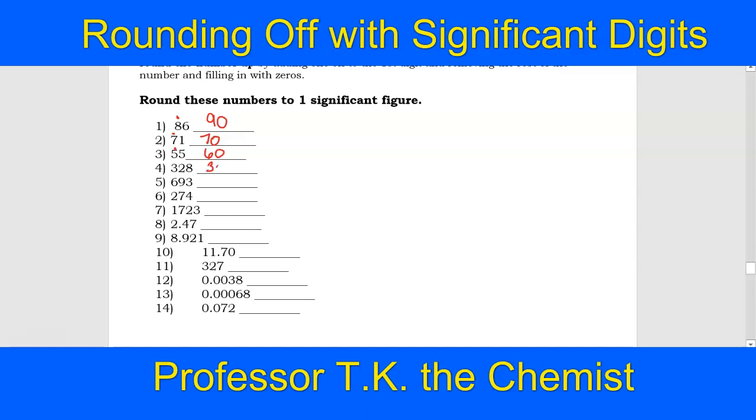That two tells that three to stay put. So I'm going to replace the two with a zero, and the eight will also get replaced with another zero. So 328 becomes 300, and that's only one significant digit.